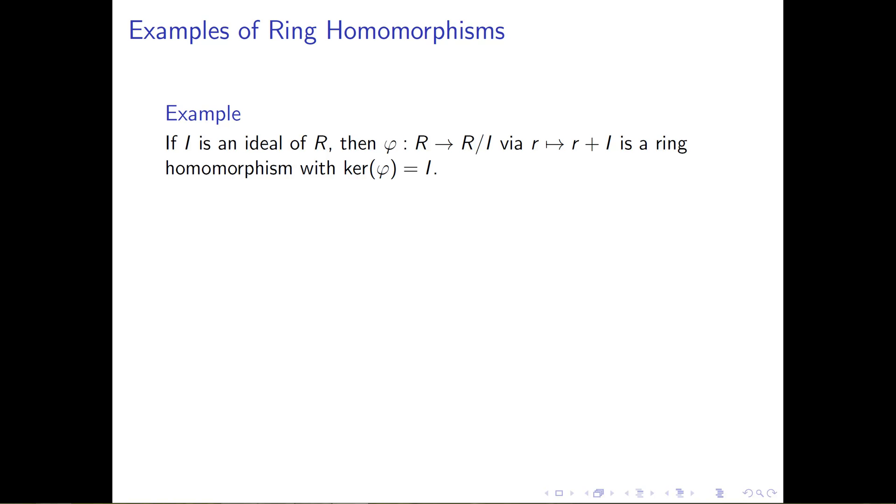And we're going to define a ring homomorphism, or define a map that we claim is a ring homomorphism, from R to S, R mod I, that takes an element of the ring R and just maps it to the coset r plus I. And we claim that this map is a ring homomorphism, where the kernel of this ring homomorphism is the ideal I.